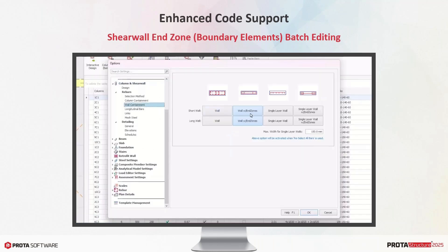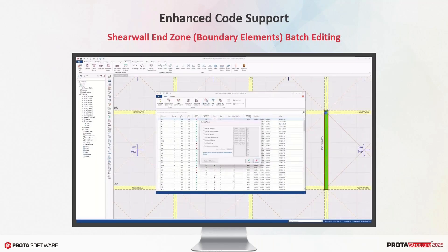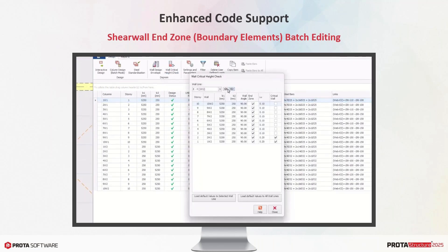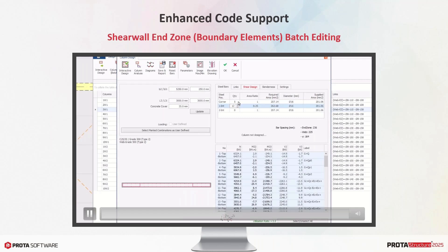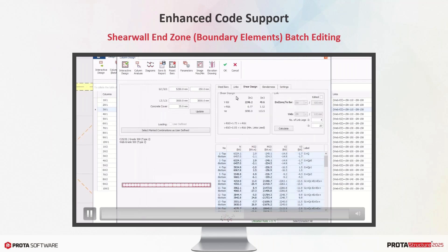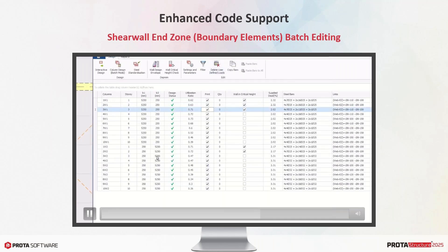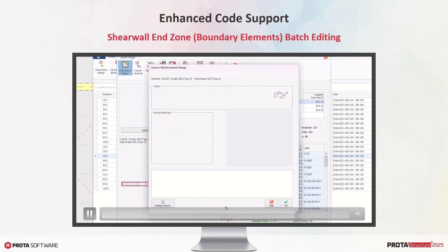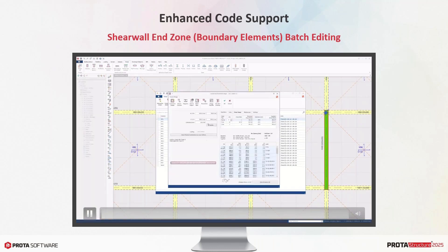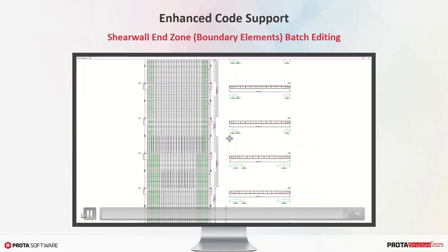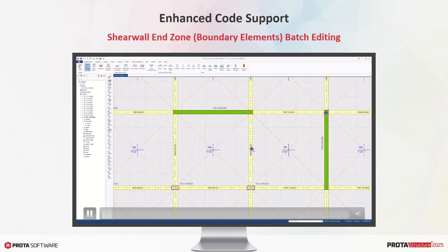Shear wall end zones, or boundary elements, are essential for maintaining ductile behavior, especially in critical plastic regions of shear walls. Each seismic code has different regulations — ACI and Eurocode follow a strain-based approach for end zone length calculation, while the Turkish code requires a minimum ratio of wall length. For some codes, end zones may not be necessary outside the critical height, while others use a reduced end zone length. Protostructure has supported shear wall and core wall end zones for a long time, and in the new version this has improved further. You can now set critical heights, end zone usage, and end zone length easily in a batch mode editor.